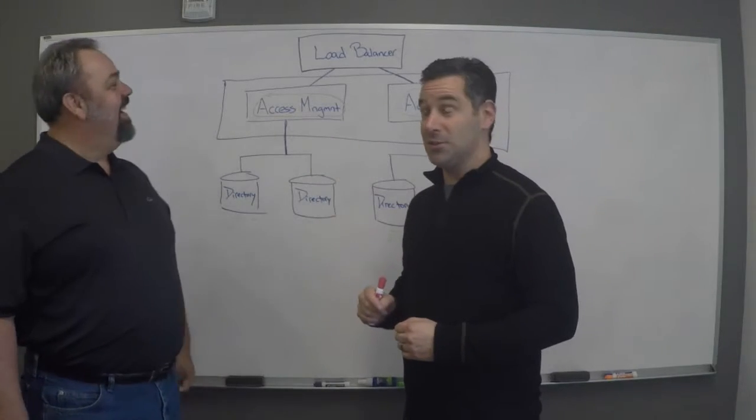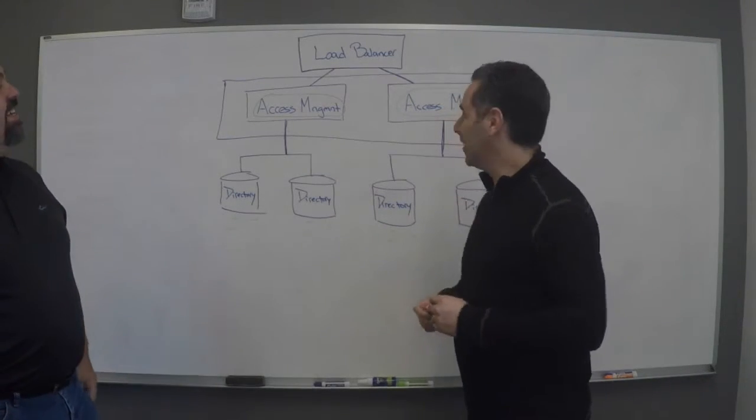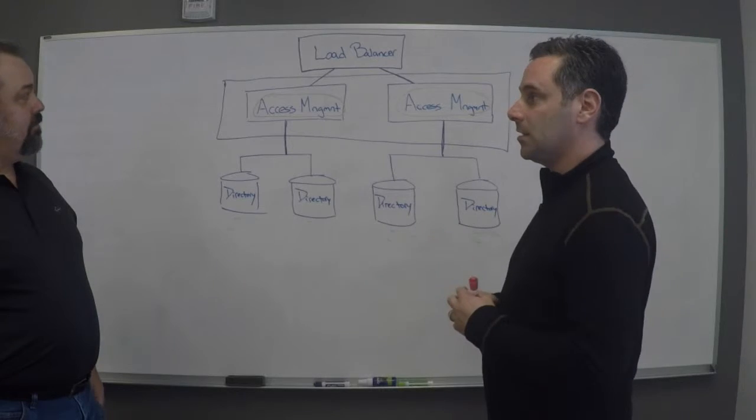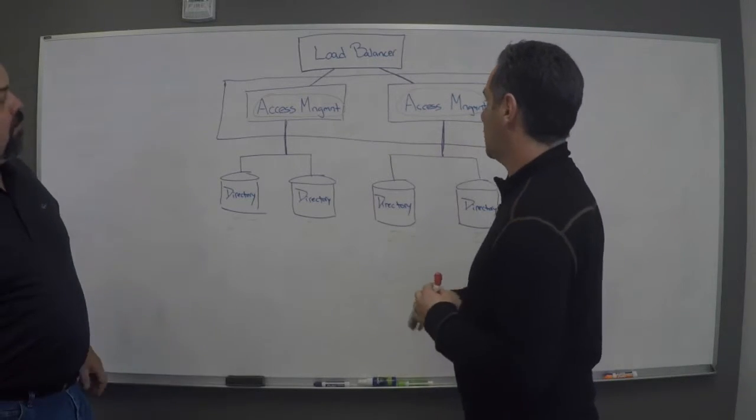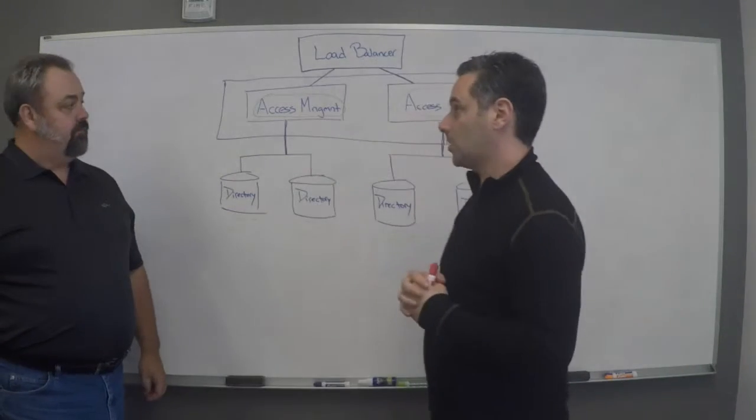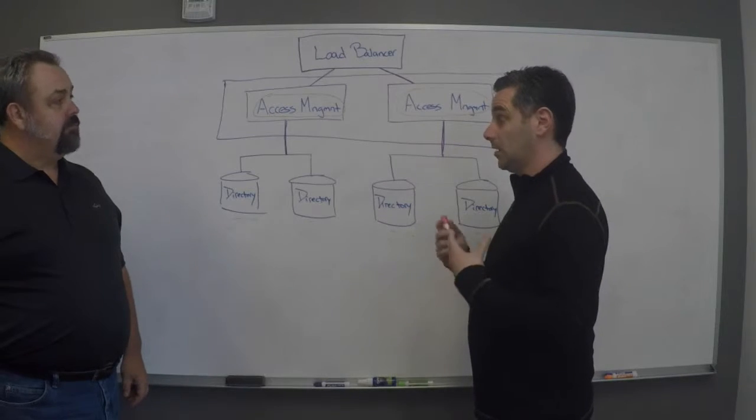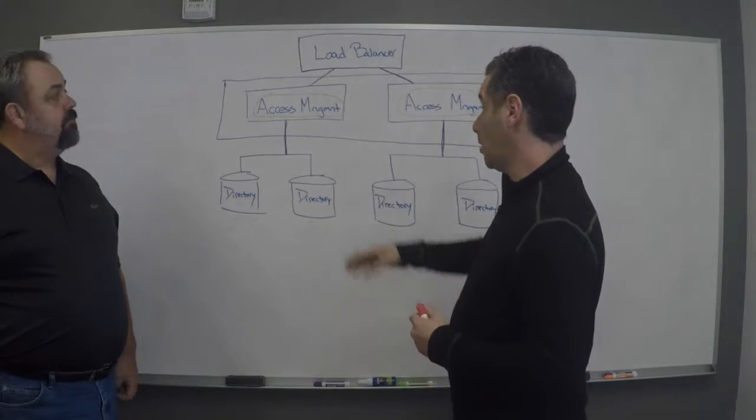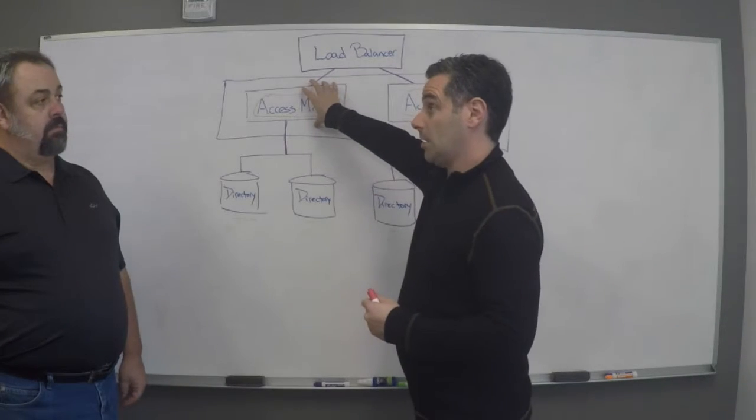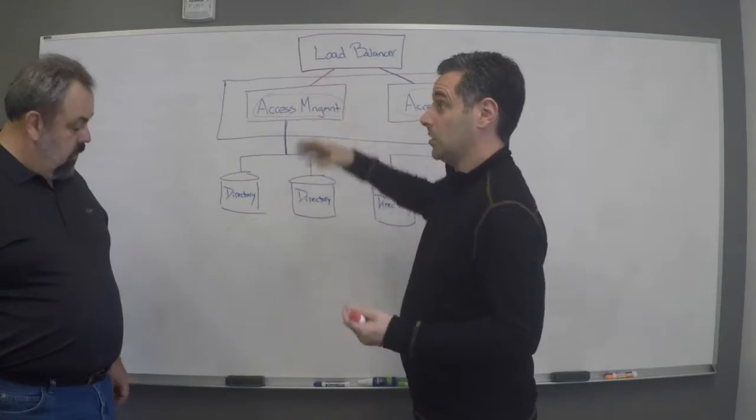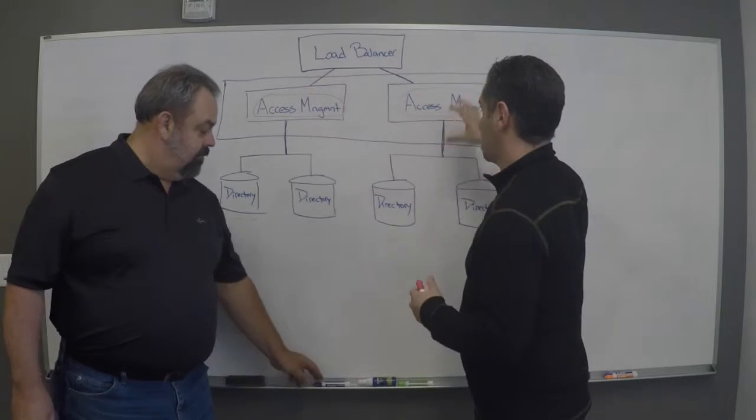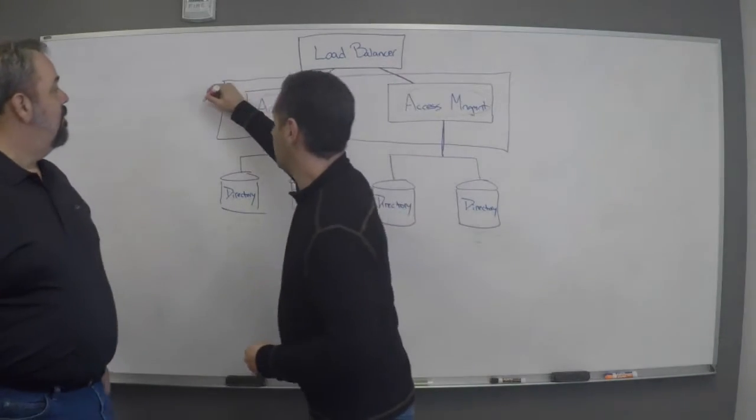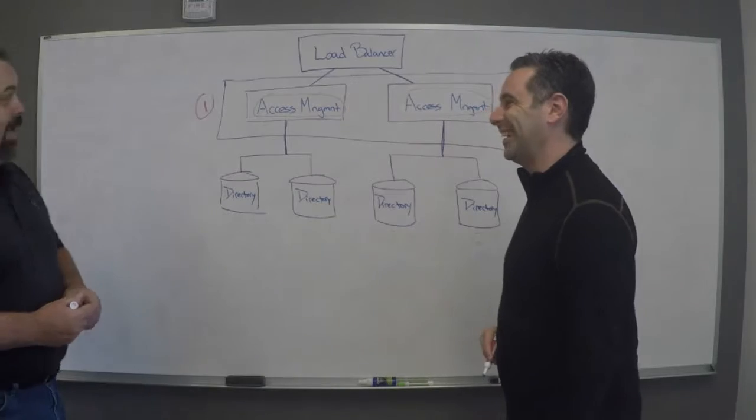Let's go to the videotape. We have a picture here of basically identity infrastructure. First and foremost, when Alan talks about things like session availability and being able to keep that identity running if something goes wrong, in access management you need something called session failover for those use cases. We'll call it scenario one.